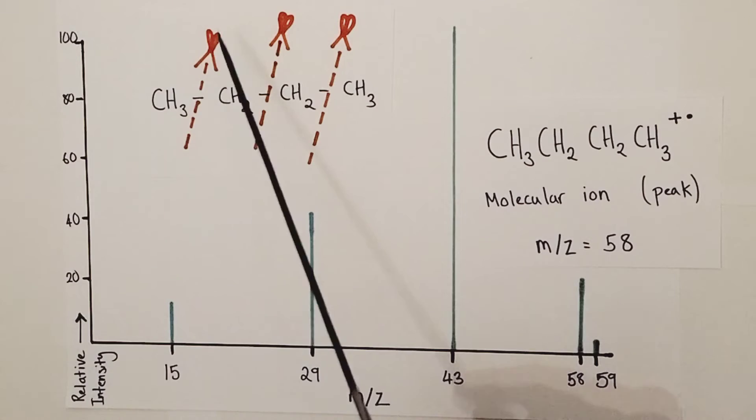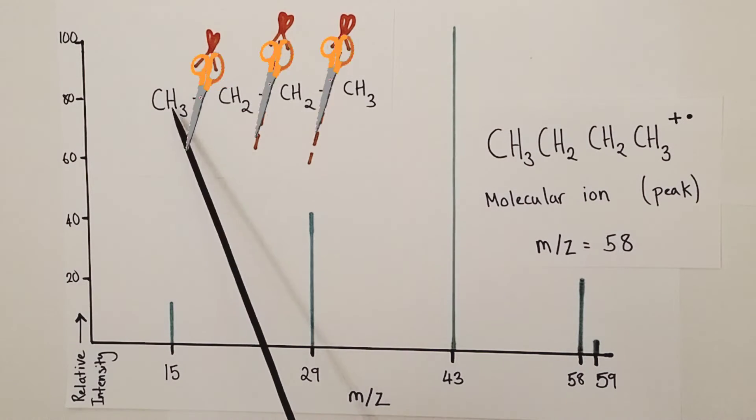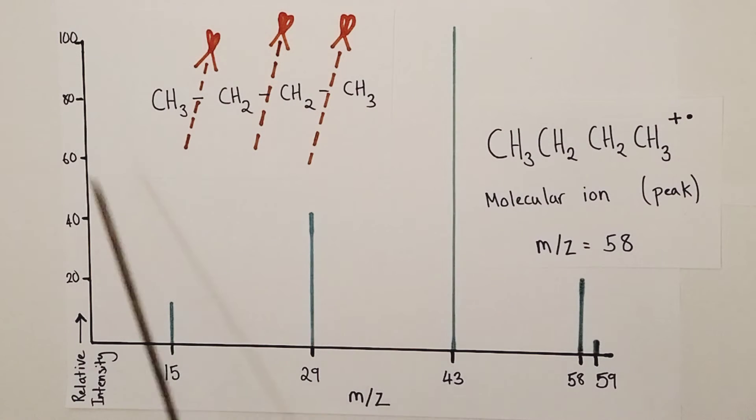This is where I come to the picture with the scissors cutting through the molecule. These are the points along a butane molecule where those fragmentations can take place, where those breaks can take place, forming positive ions with smaller masses than the mass of the whole molecule itself. We're going to look at each of those possible fragmentations. What piece of molecule possesses the positive charge, and therefore is responsible for our peaks at mass charge ratio 15, 29, and 43, respectively?